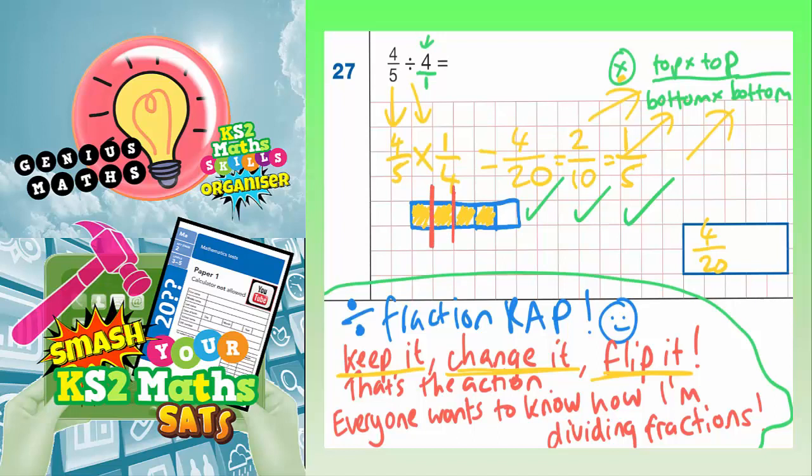So 1 bit, 2 bits, 3 bits, 4 bits. And each of those bits that we've just split it into, we've shared the 4 fifths into 4 equal bits. Each of those bits is actually 1 fifth of the original chocolate bar, isn't it?